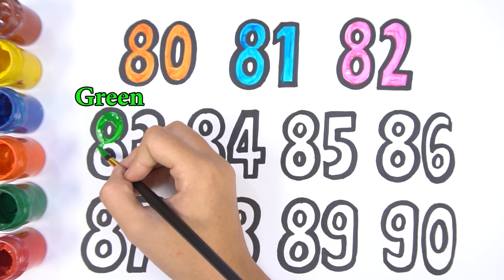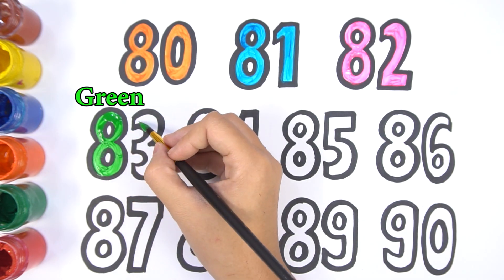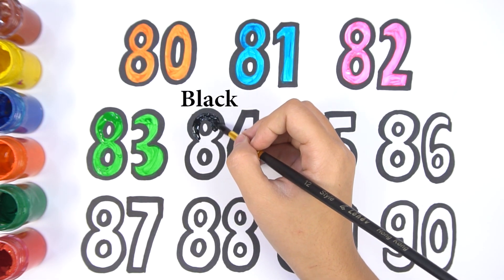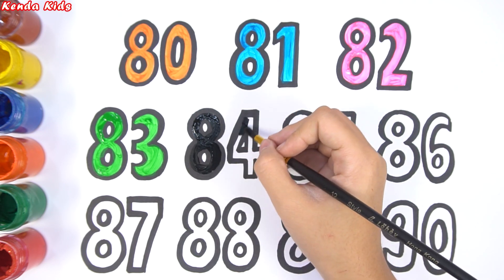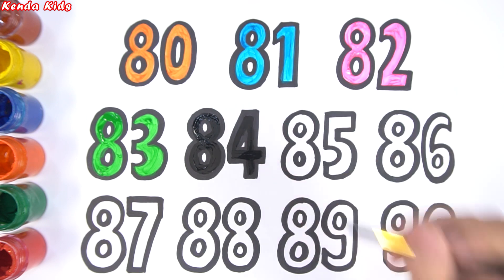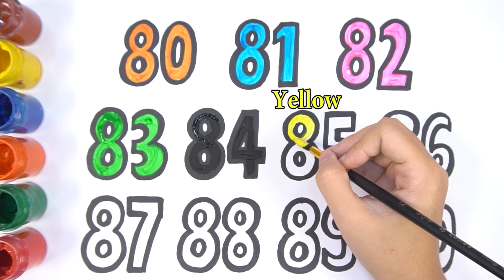83 is green color. Black color for number 84. Yellow color for number 85.